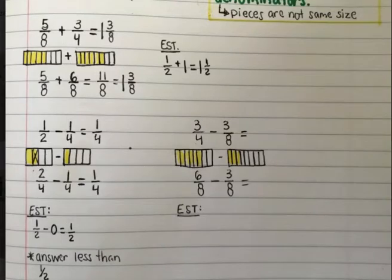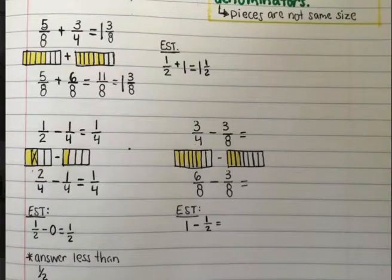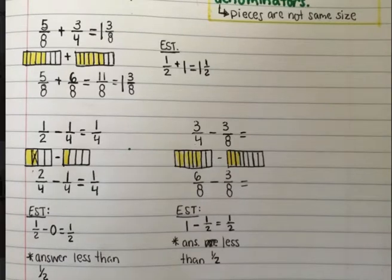We want to estimate. Six eighths you could say is about one, and three eighths is about a half. So our estimate was about one minus a half, which is a half. However, some of you might have said you had a half and wanted to take away a half, which would be zero. So I know my answer is going to be less than a half.